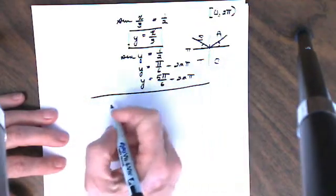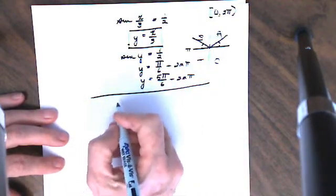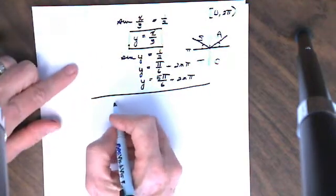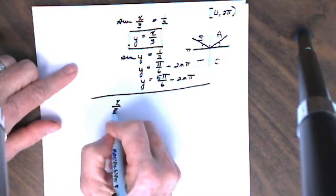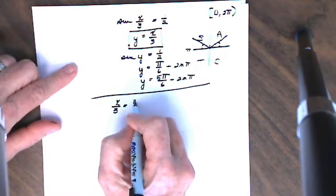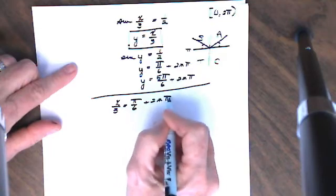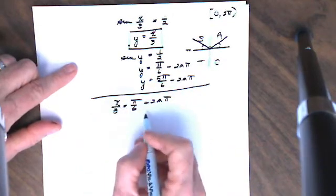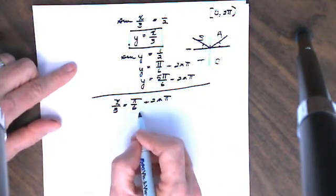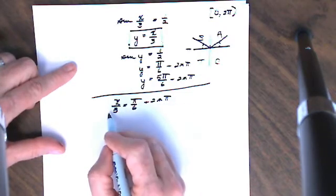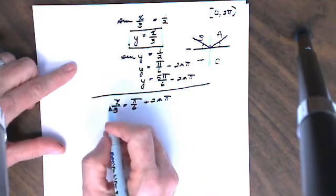In the next step of this equation, I am going to replace my y with x over 3. So now I have x over 3 is equal to π over 6 plus 2nπ. Now I want to get x alone on one side of this equation, and it seems to me the best way to do that would be to multiply both sides of my equation by the number 3.